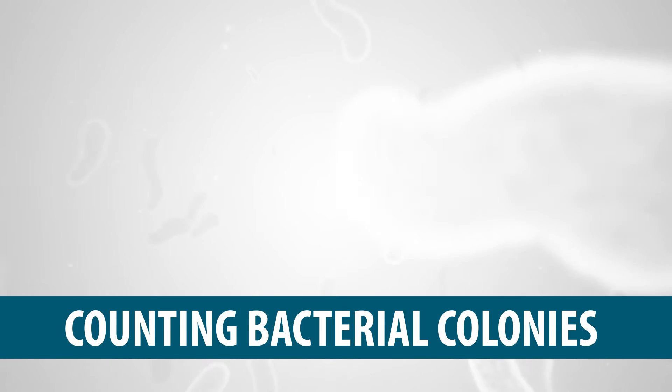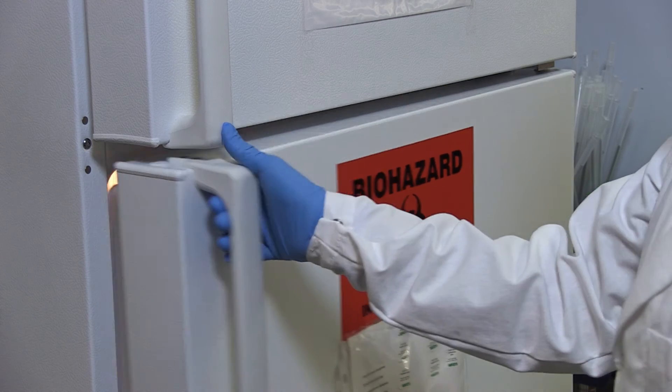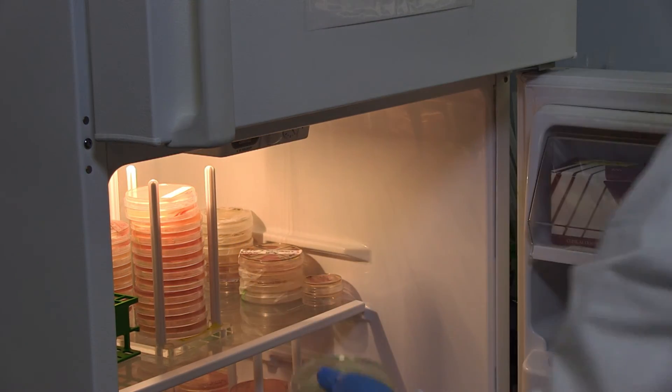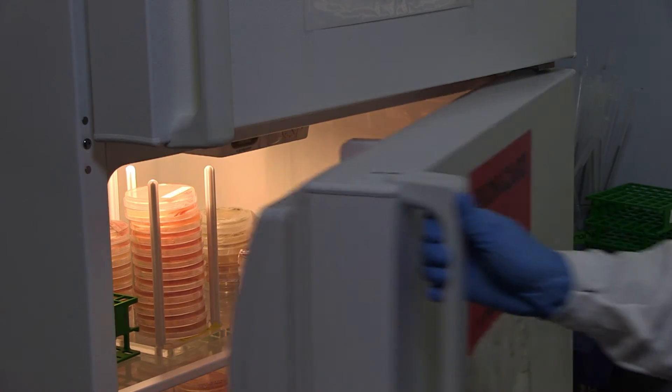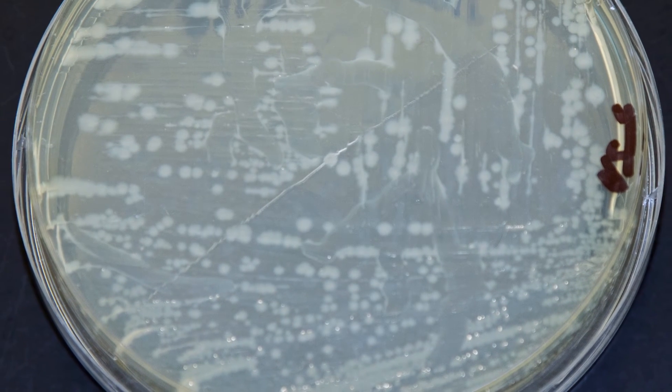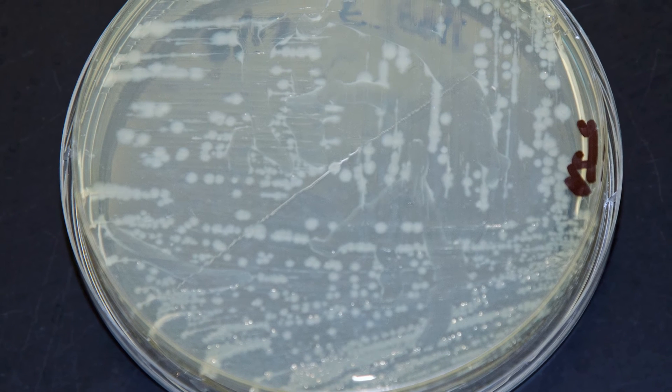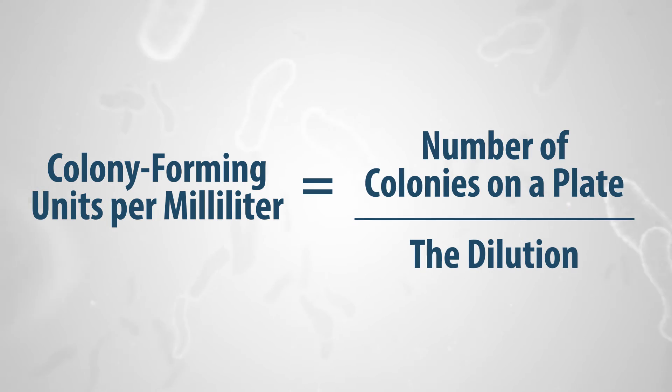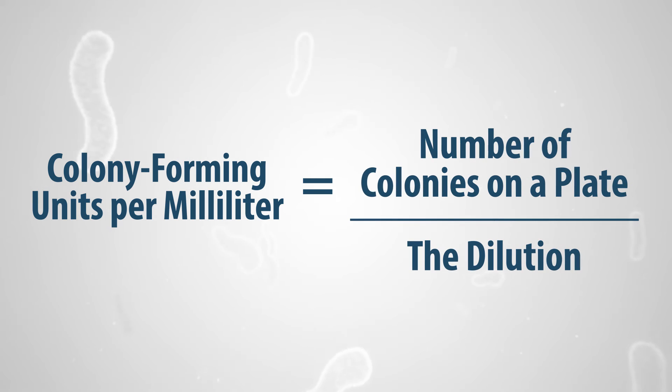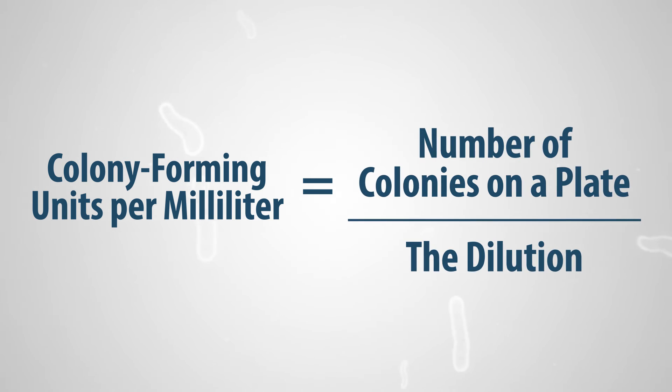Counting bacterial colonies. After incubation, bacterial growth is visible as colonies on the agar plates. To determine the number of bacteria in the original sample, a plate with 30 to 300 colonies is selected. The number of bacteria in the original sample is calculated using the following equation: Colony forming units per milliliter equals the number of colonies on plate divided by the dilution.